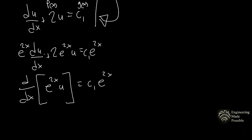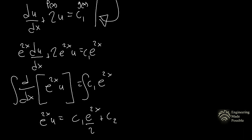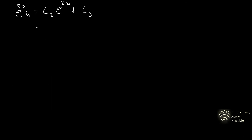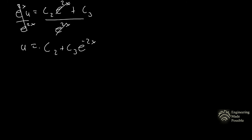From here, it's essentially the product rule. We get the same differential equation, then integrate both sides to solve. We have e^(2x) times u equals c₁ times e^(2x)/2 plus another arbitrary constant. Since an arbitrary constant divided by 2 is still an arbitrary constant, we call them c₂ and c₃. So u equals c₂ plus c₃ e^(−2x).